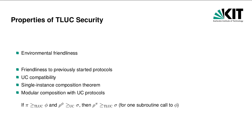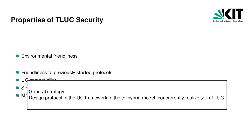If we combine the above properties, we can show the following modular composition property with UC protocols: if protocol pi TLAC emulates protocol phi, and protocol rho in the phi-hybrid model UC emulates protocol sigma, then rho with subroutine calls to phi replaced by calls to pi also TLAC emulates sigma. This leads to the following general strategy: take a UC-secure protocol in the F-hybrid model, where F is an ideal functionality that cannot be realized in the plain model. Concurrently realize F in TLAC, which can be done in the plain model. As a last step, plug our realization of F into the UC protocol. The composite protocol is then guaranteed to retain its security. In contrast to previous notions, this is possible for all UC protocols. For example, we can take the most efficient UC protocol for some task and realize its setup in an input-independent preprocessing phase of the TLAC protocol in the plain model.